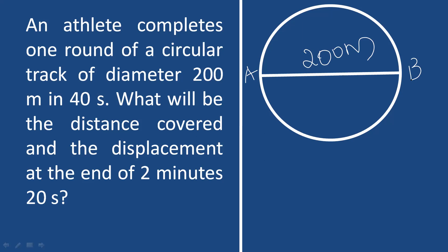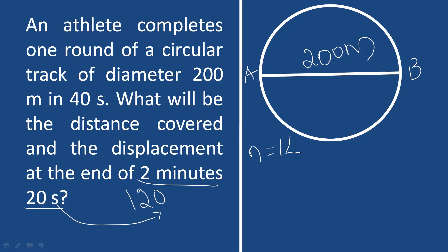Let's calculate the number of rotations. Number of rotations equals total time divided by time for one round. The total time is 2 minutes and 20 seconds. Converting to seconds: 2 minutes is 120 seconds, plus 20 seconds gives 140 seconds. Divided by time for one round, which is 40 seconds.